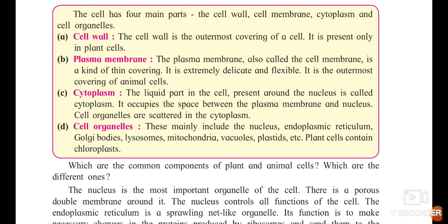Cell organelles include mainly nucleus, endoplasmic reticulum, Golgi bodies, ribosomes, mitochondria, vacuoles, plastids, etc. Plant cells contain chloroplasts, animal cells don't, because plant cells produce their own food with the help of sunlight and they consist of chlorophyll. So chloroplasts are only present in plant cells.